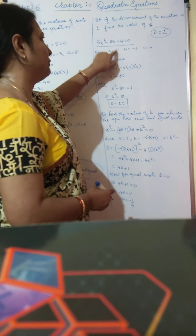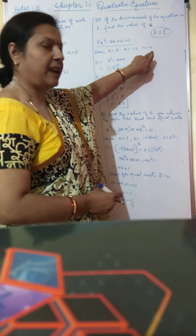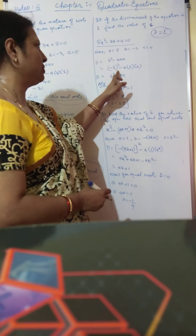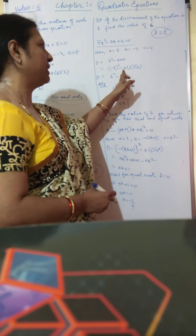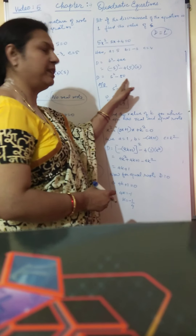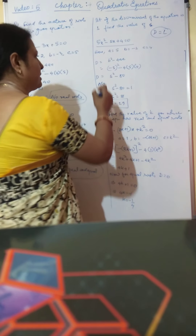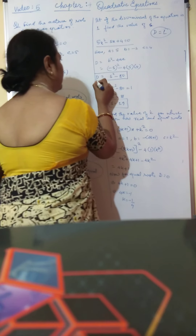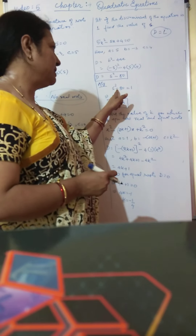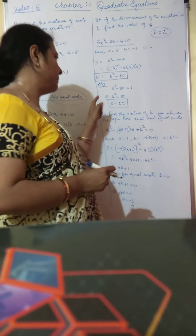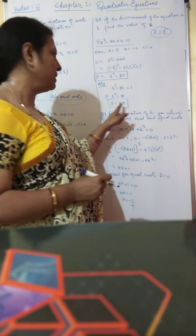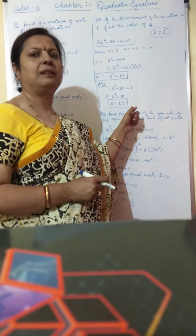Substituting in b² minus 4ac: minus s whole squared minus 4 into 5 into 4, which comes up as s² minus 80. According to the question, this equals 1, so s² minus 80 equals 1. Therefore s² equals 81, and taking square roots on both sides we get the value of s as plus or minus 9.